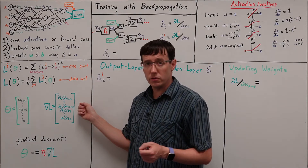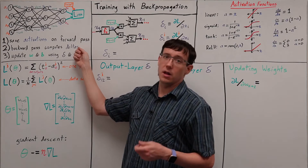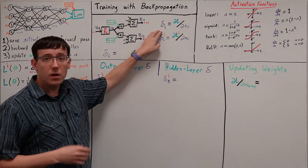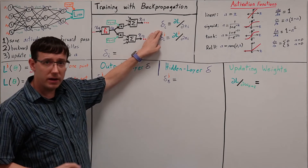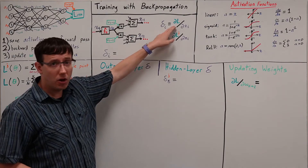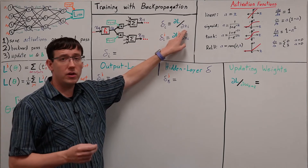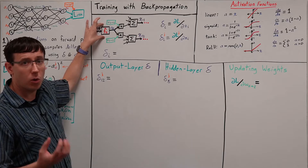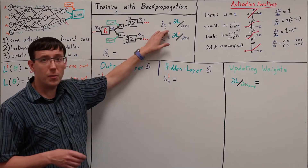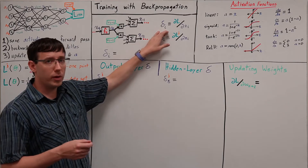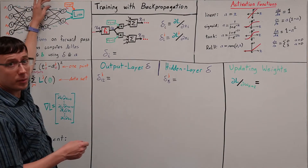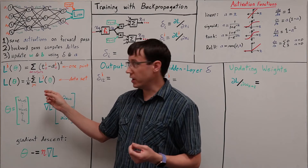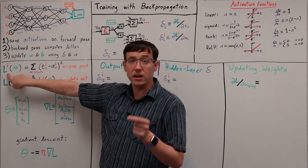For computing those partial derivatives, the key step turns out to be computing a quantity that we'll call delta for each of the output and hidden layer nodes in the network. For any of our computing neurons, we define delta to be the partial derivative of the loss with respect to the weighted sum of inputs at that neuron. This xi is what gets passed into the activation function for neuron i, and we compute this quantity on the backward pass because it will determine the weight updates we perform for every edge coming into that neuron.